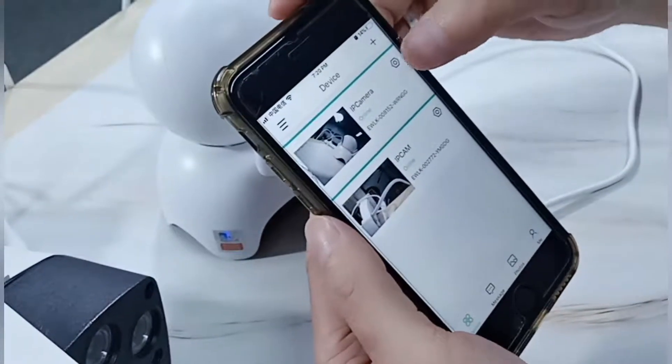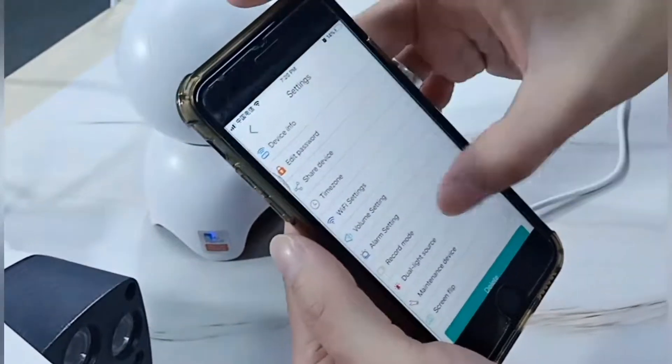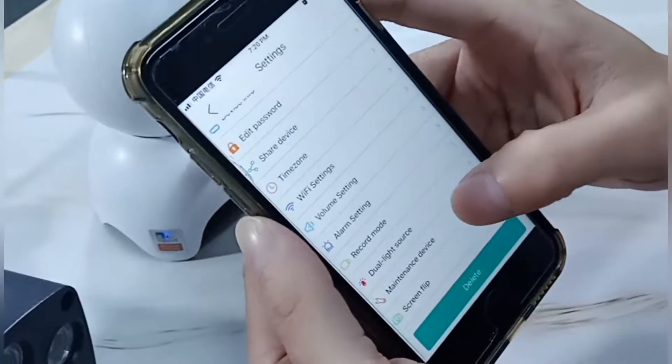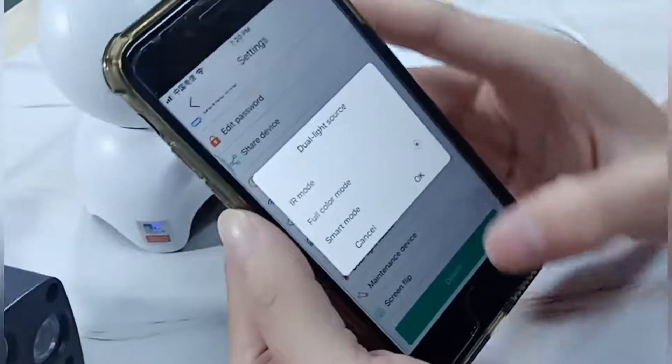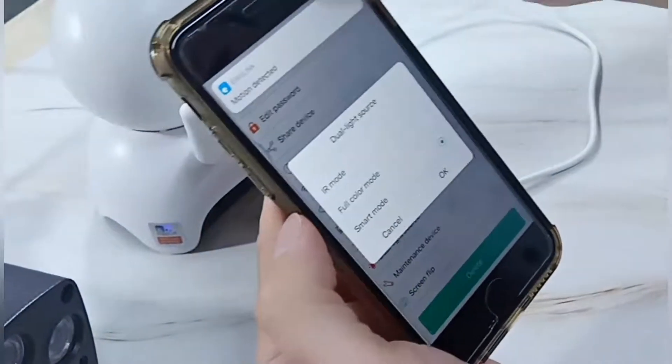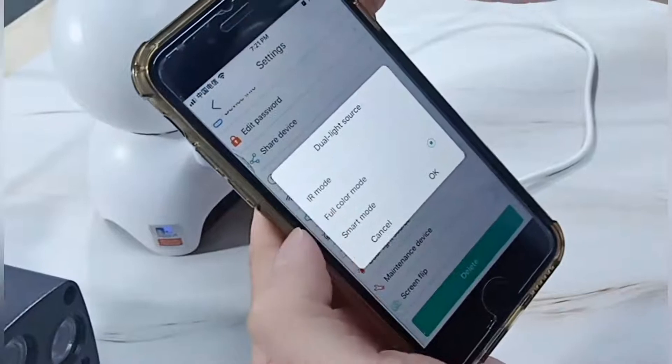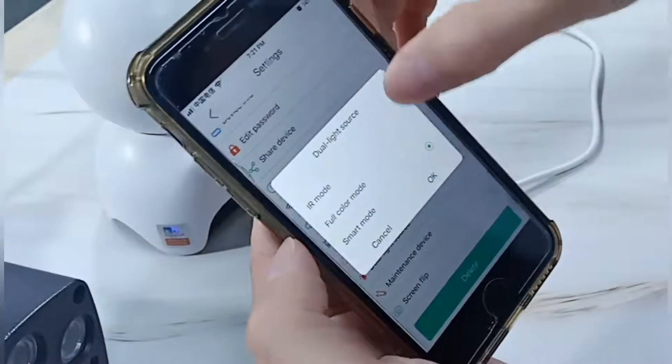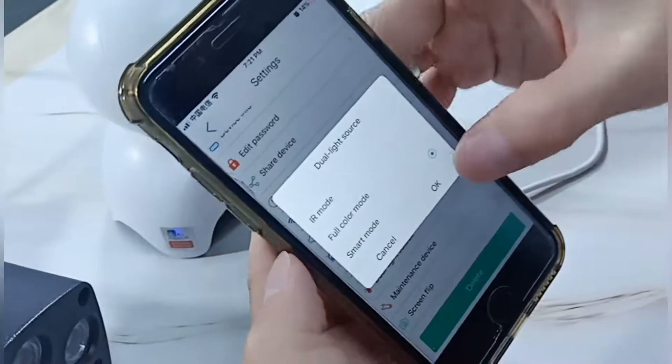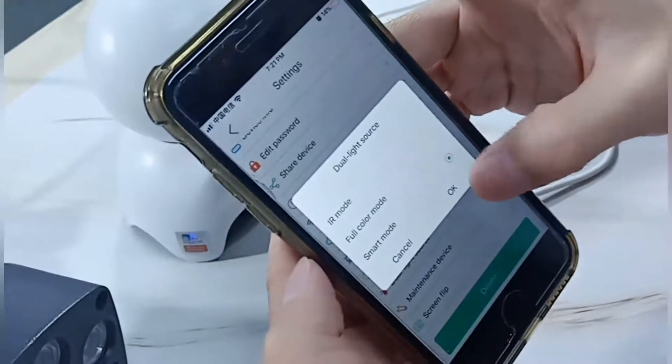And for this outdoor camera, here you can see a dual light source. This is the live vision junction. You can select IR mode or full color mode or smart mode. Let's test the smart mode.